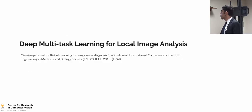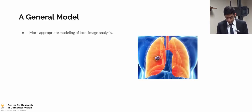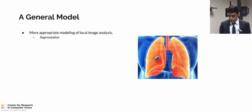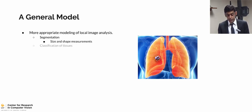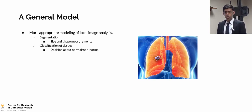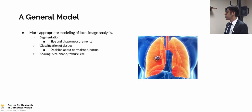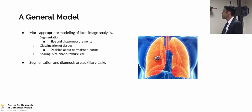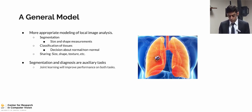Knowing that more appropriate modeling of local image analysis is needed, and that segmentation for size and shape measurement and classification of tissues as detection of normal versus abnormal could be very helpful — we hypothesized that these two tasks share some underlying features, namely size, shape, and texture. With that, these two tasks can be modeled as auxiliary tasks from a machine learning point of view and can be jointly learned for better performance on both tasks. The challenge is that we have very limited annotations for the segmentations.